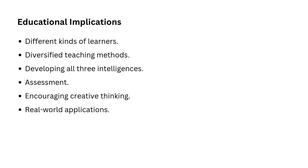Let's talk about the educational implications of Sternberg's theory. Point one: different kinds of learners. Sternberg's theory tells us that students have different strengths — some might be more analytical, some more creative, and others more practical. Teachers need to recognize these differences to help students excel in all areas. Point two: diversify teaching methods. Teachers should use varied instructional strategies and cannot just focus on analytical skills — they also need to incorporate creative and practical learning opportunities, like projects or real-world problem-solving tasks.